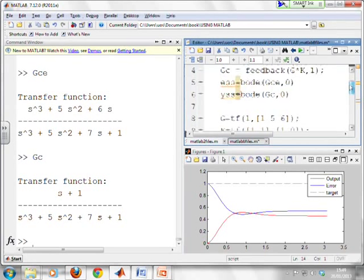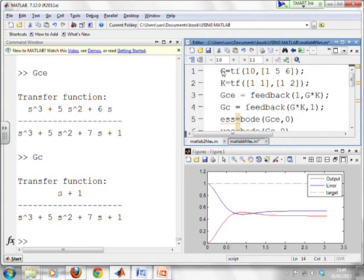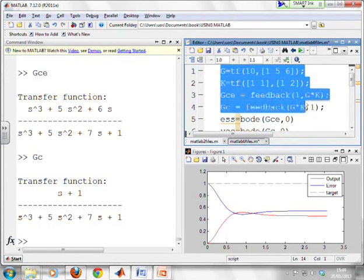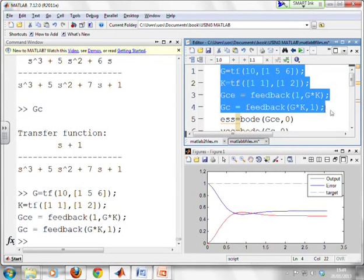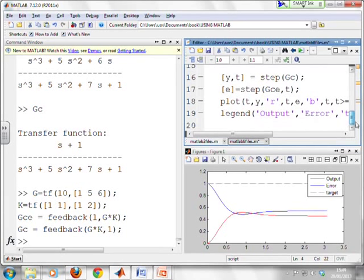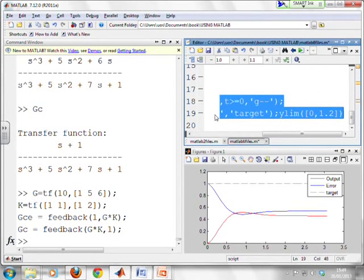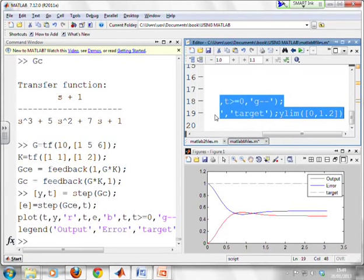First, let's put the first example back in. There's the G, the K, the GCE, and the GC. Let's calculate them. Now if we use these lines we just showed, let's see what happens. If you look at the figure we've just produced, you'll see the output is in red, the error is in blue, and the target of 1 is in green.